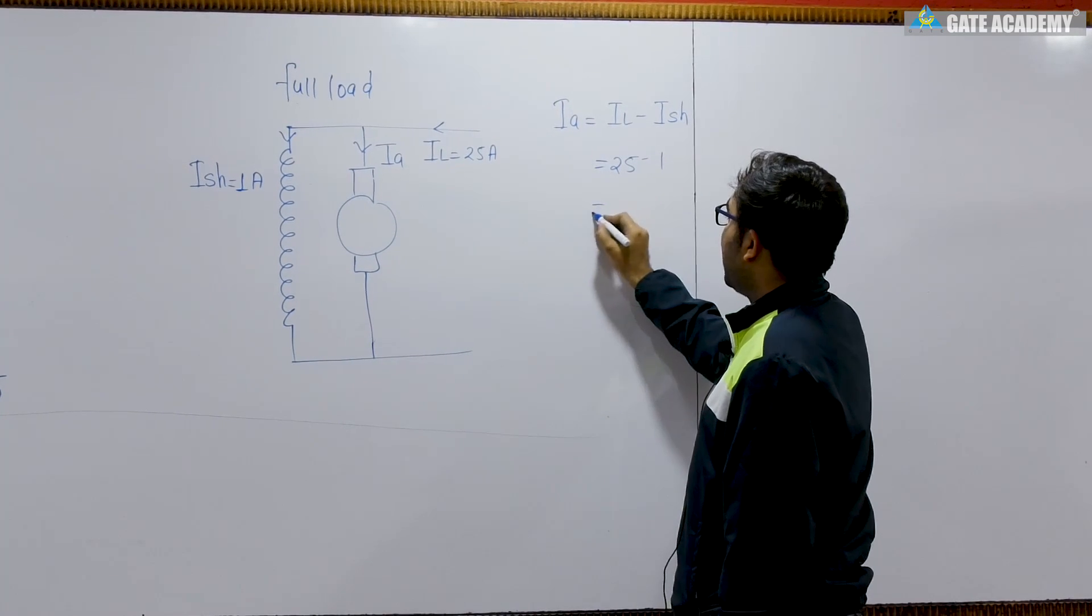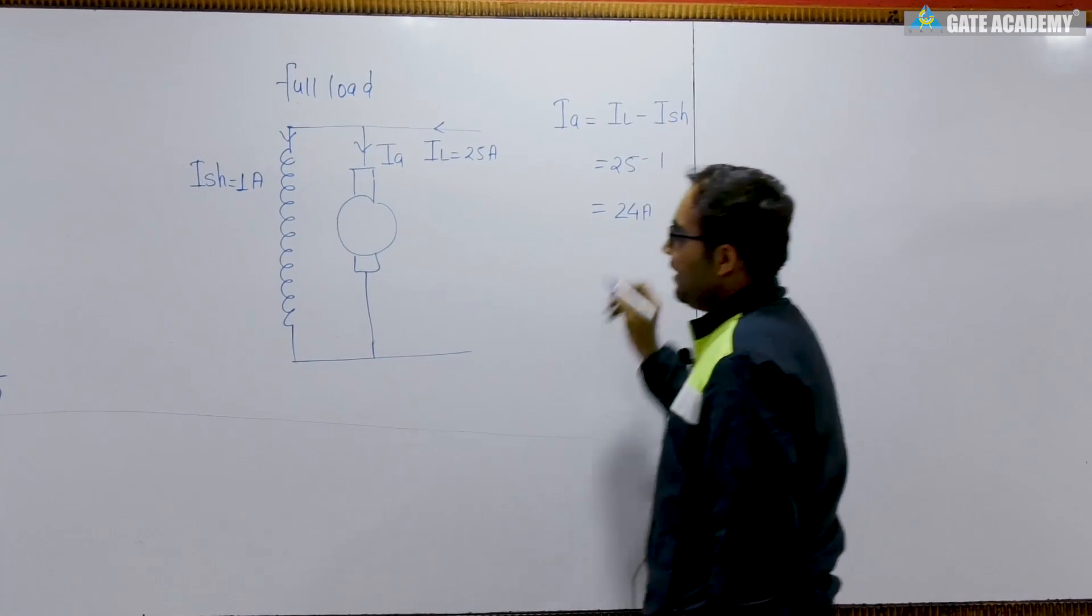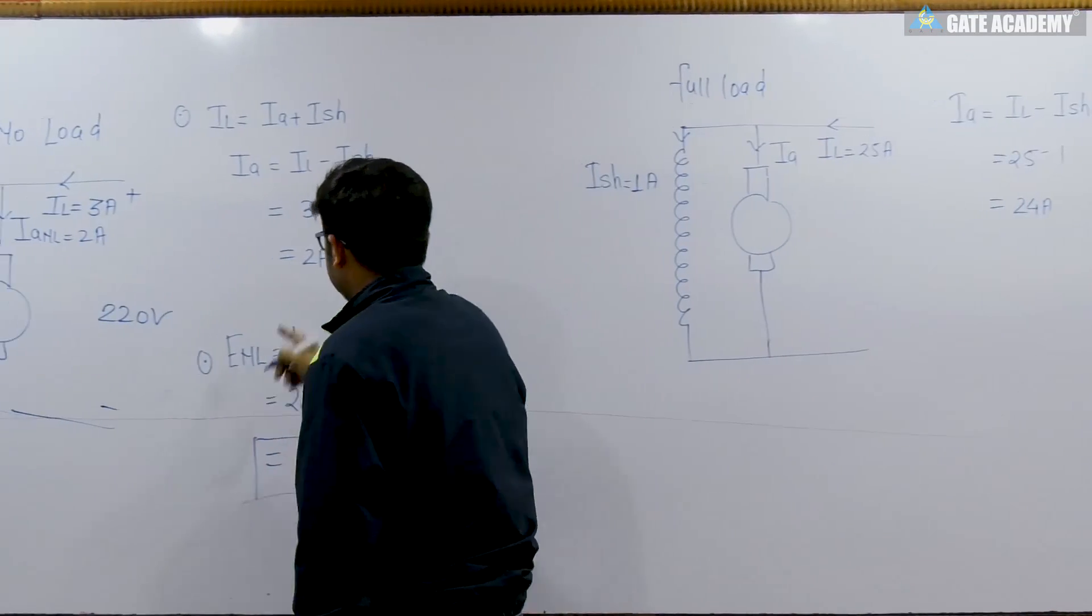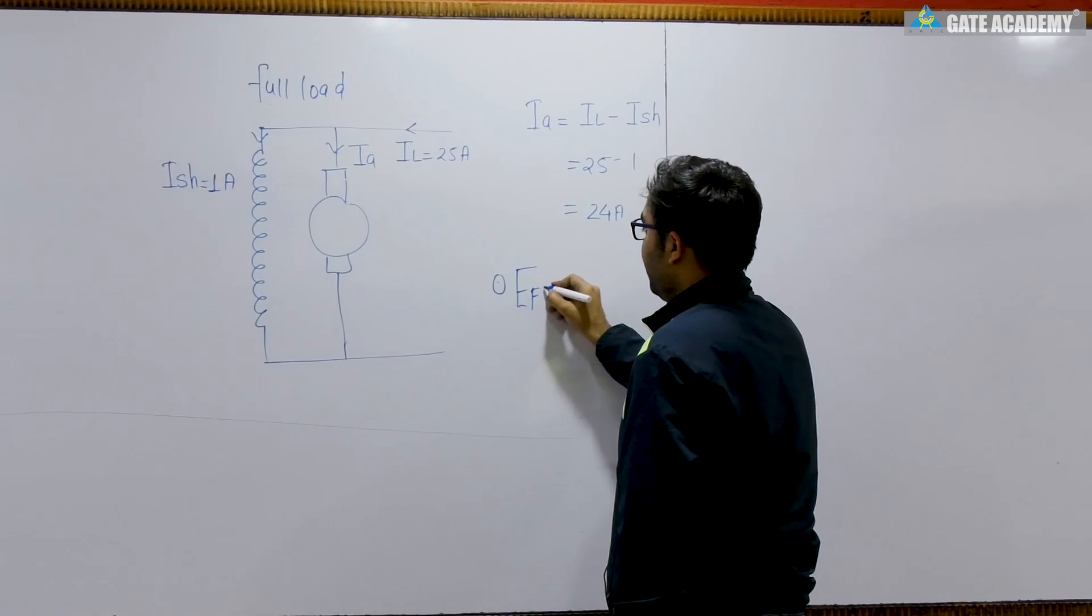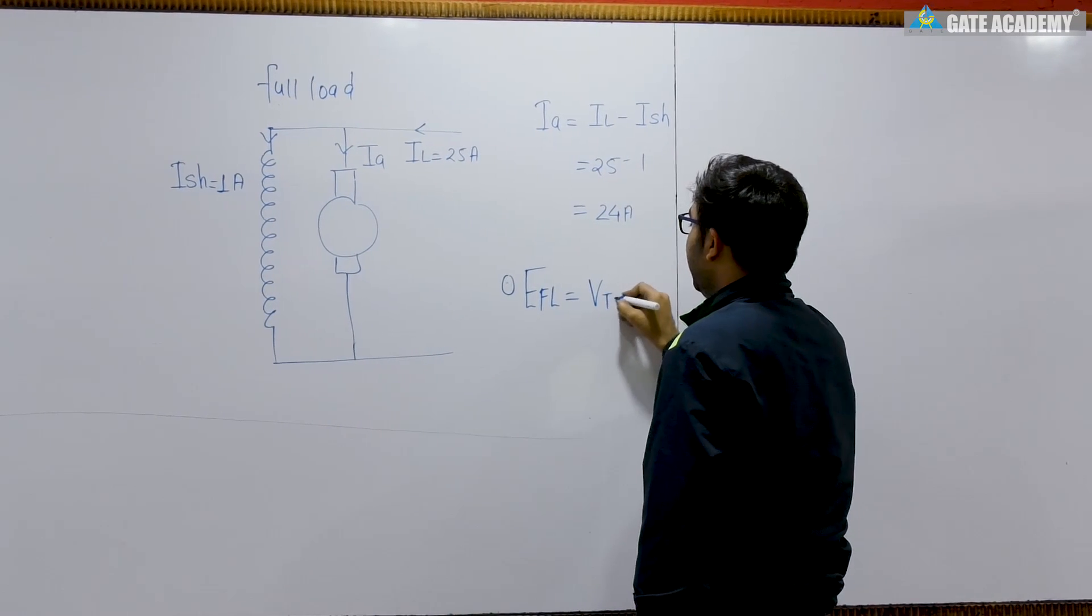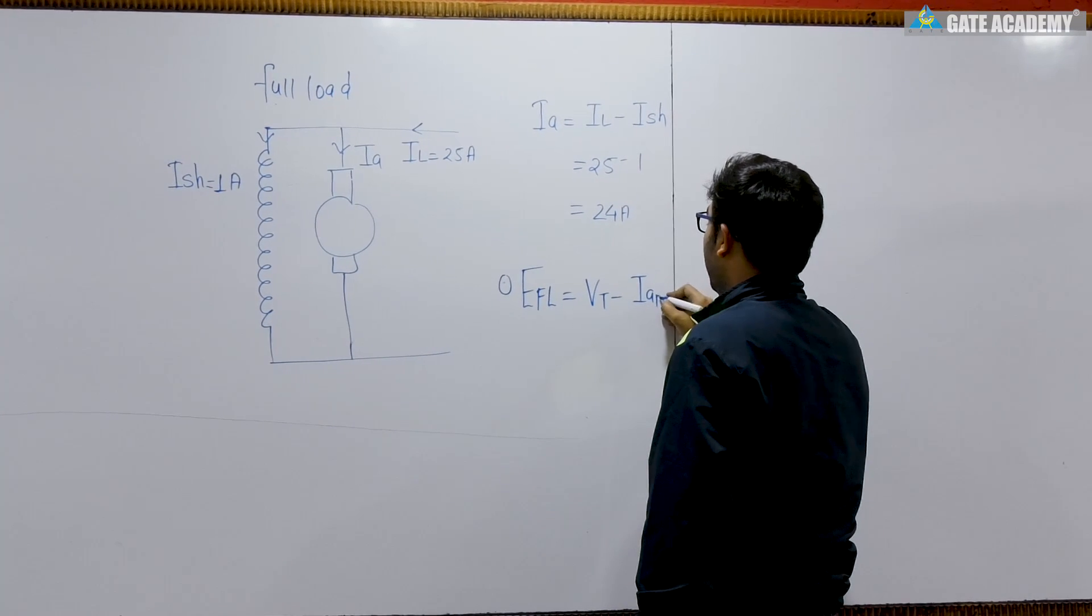So it will be equal to 25 minus 1, that is 24 ampere. So if I say this is 1, this is 2, it's okay, no problem. So if I find the value of back EMF at full load, what will happen? This is equal to Vt minus Ia of full load into Ra.